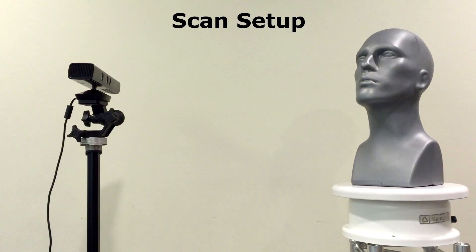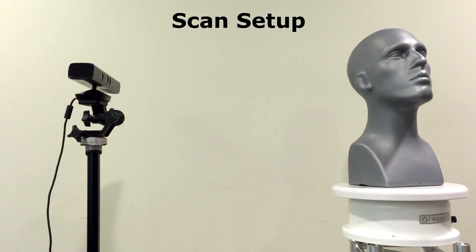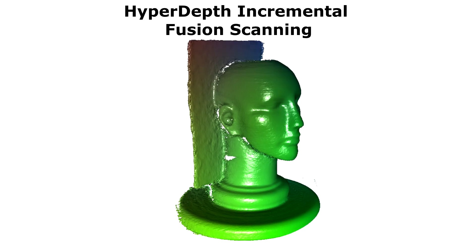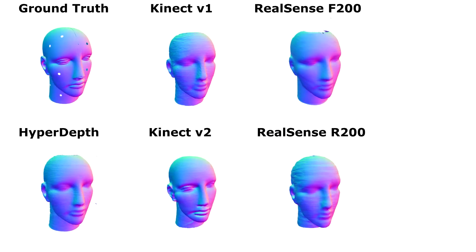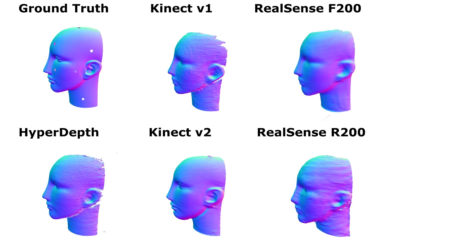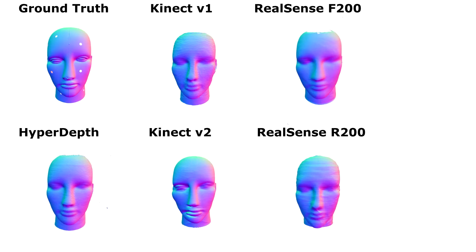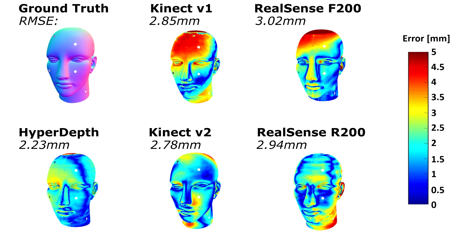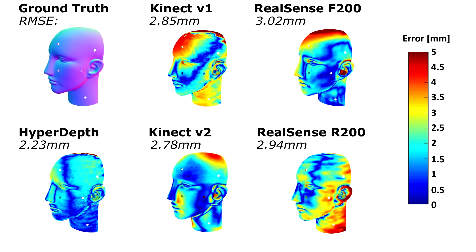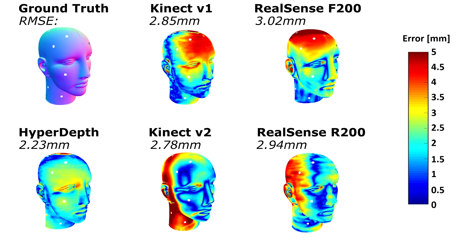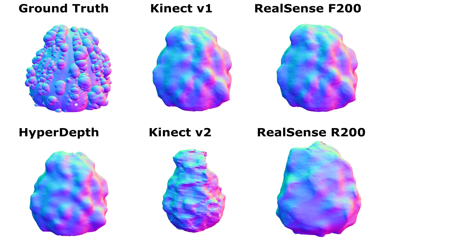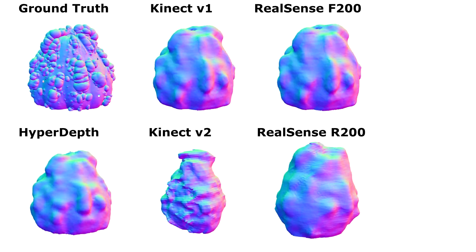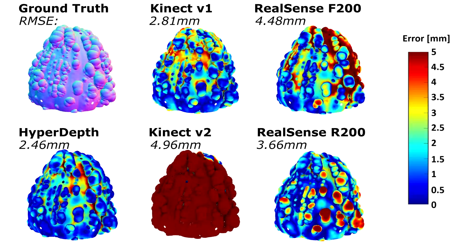To further test the quality of our algorithm, we ran an experiment where we scanned a series of objects using a number of state-of-the-art depth camera technologies. We used KinectFusion to fuse these depth maps over time into a single fused model. Here we see results from our system compared to cameras from both Microsoft and Intel. Note in all of these examples, HyperDepth shows improved reconstruction quality based on the final RMS error of each of the 3D models.